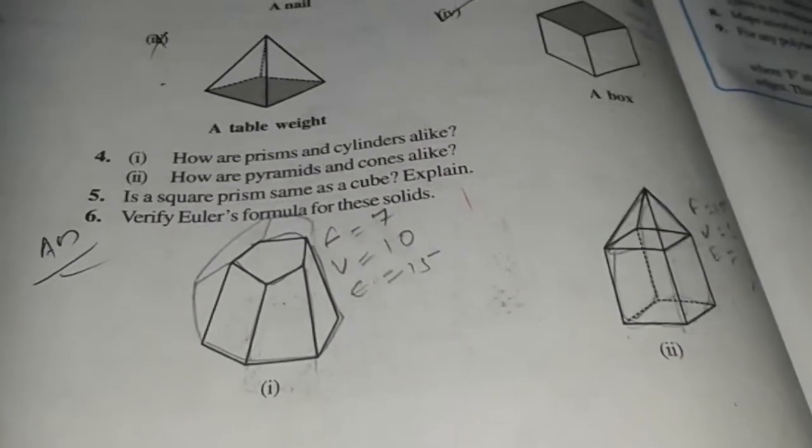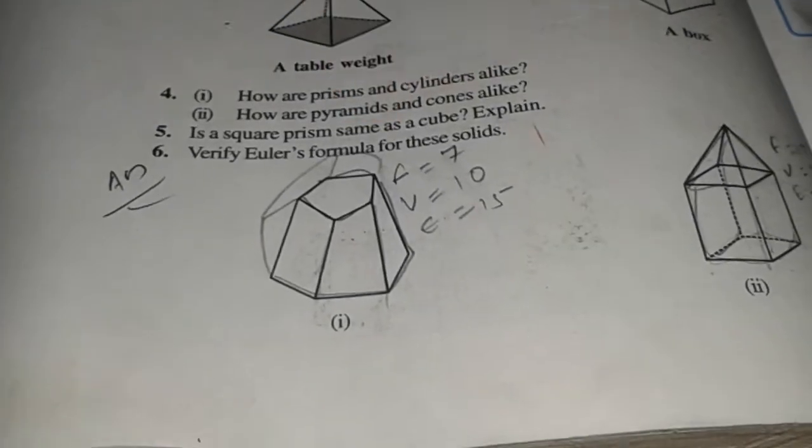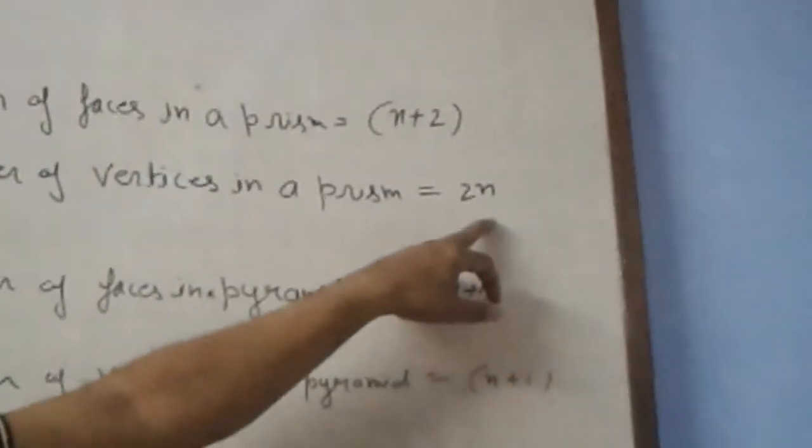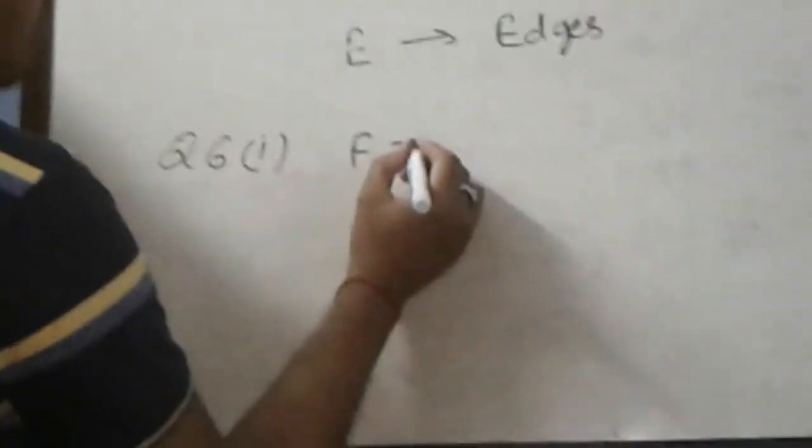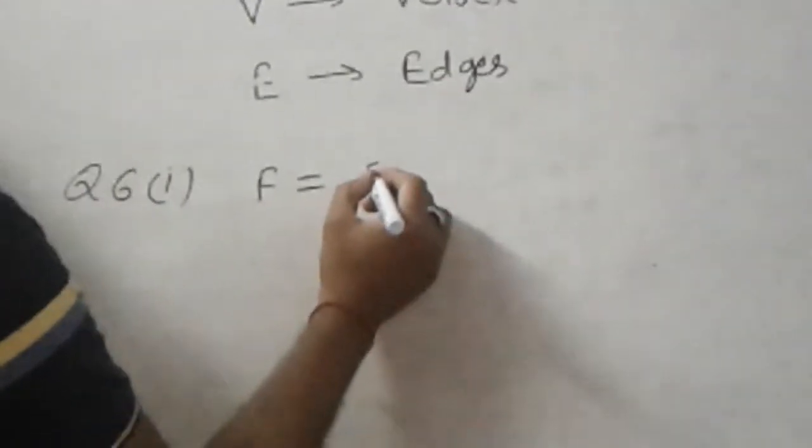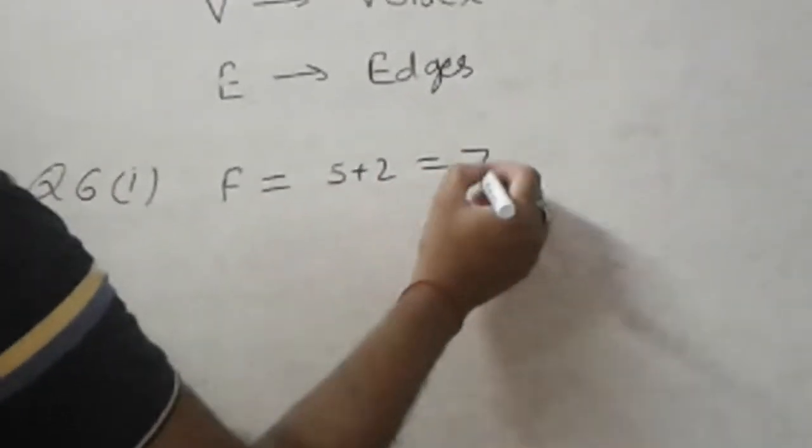Now we will solve question number 6. Verify Euler's formula for this figure. In the figure, first it is a pentagonal prism. We have a pentagonal prism in the figure. The base is pentagon. Number of faces: pentagon is 5, so n plus 2. Faces is 5 plus 2 equals 7.